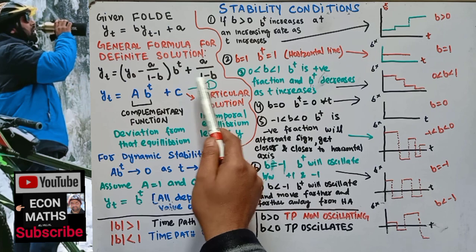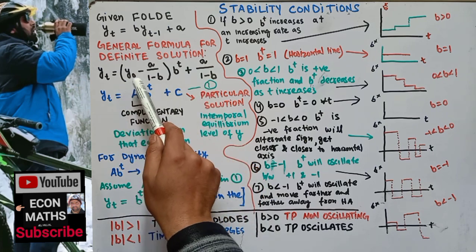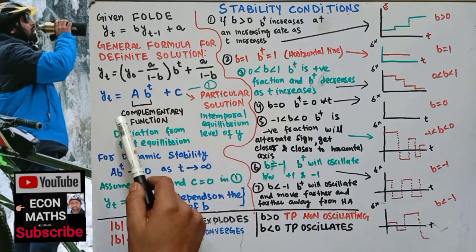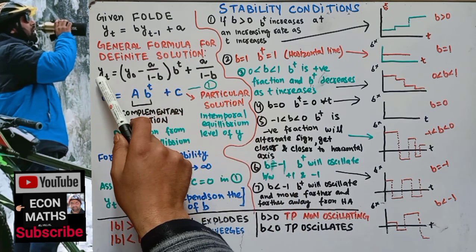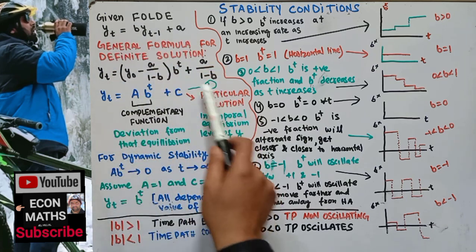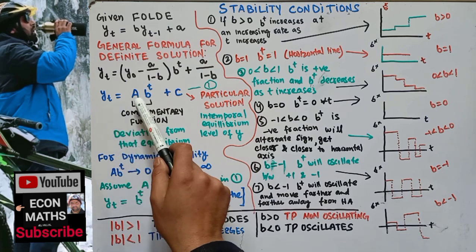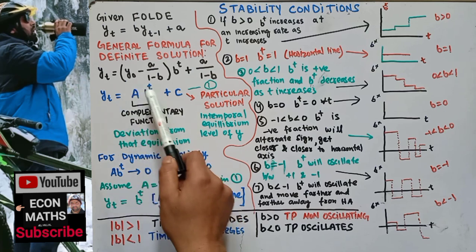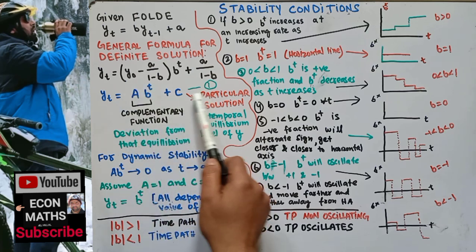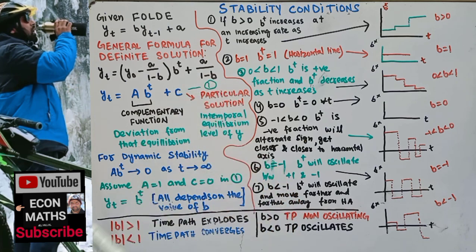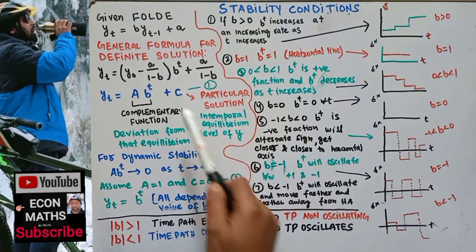If b equals 0, the equation reduces to y_t equals y_0 plus a·t. The general form — the time path or solution — is y_t equals A·b^t plus c. The first term on the right-hand side is called the complementary function and the second term is called the particular solution. The constant c denotes the intertemporal equilibrium level of y.